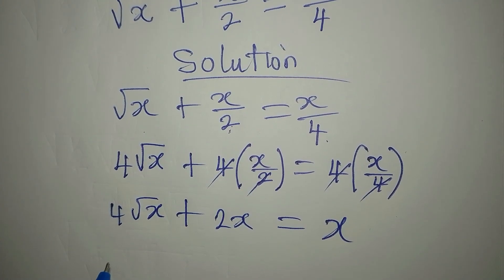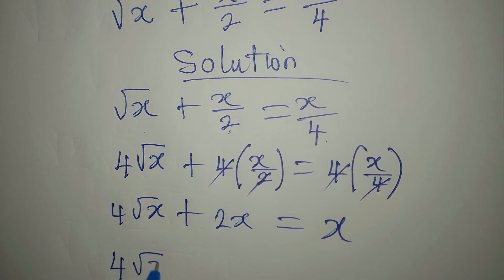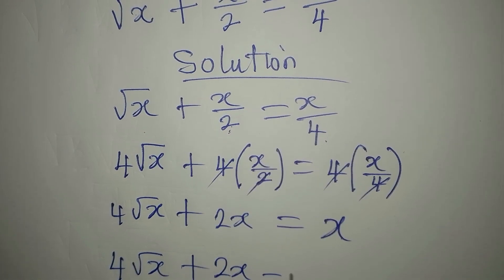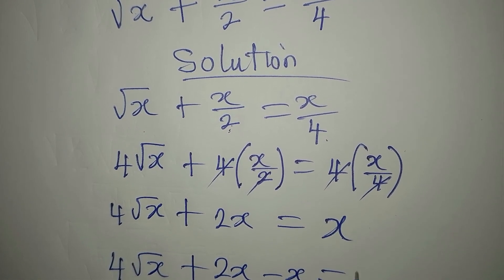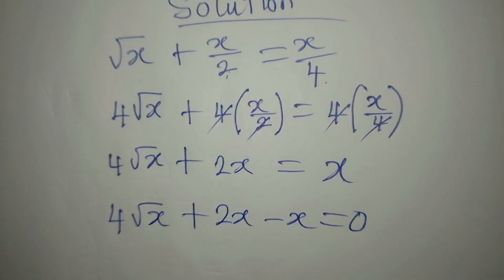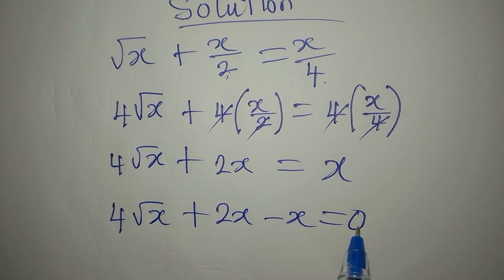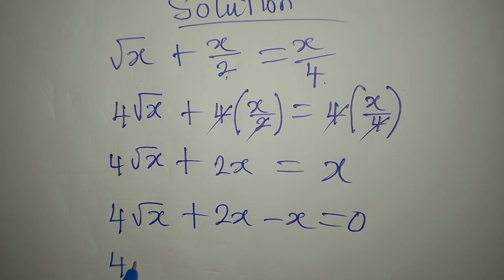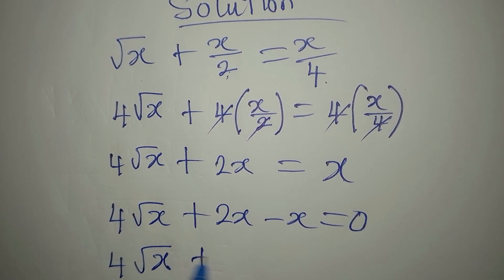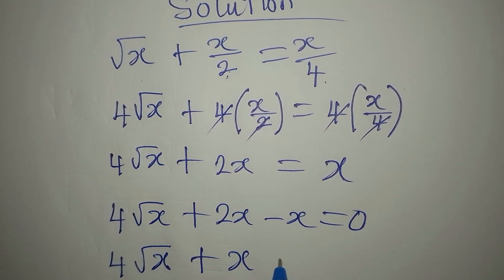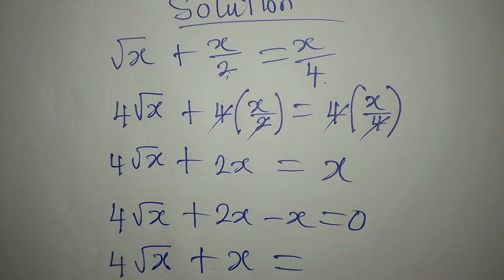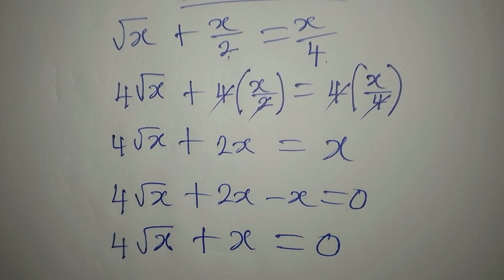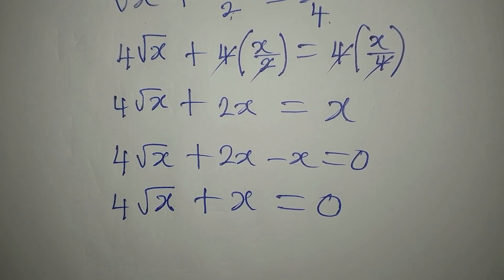Now let's bring the x terms to the left. We have four root x plus two x minus x equals zero, so four root x plus x equals zero.